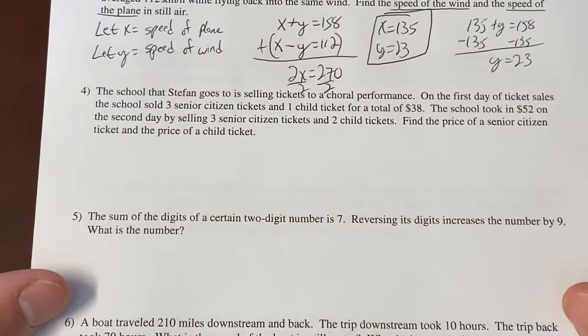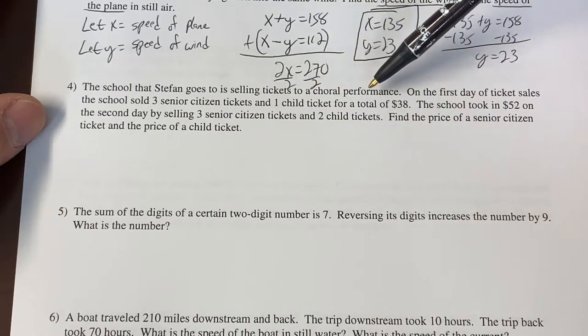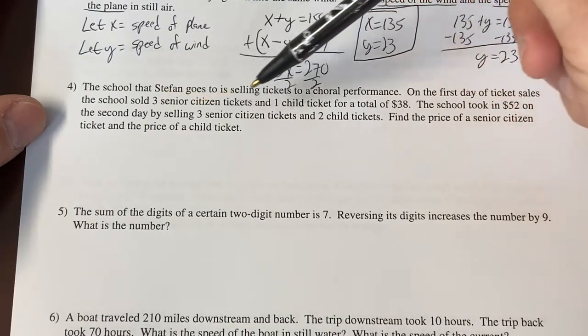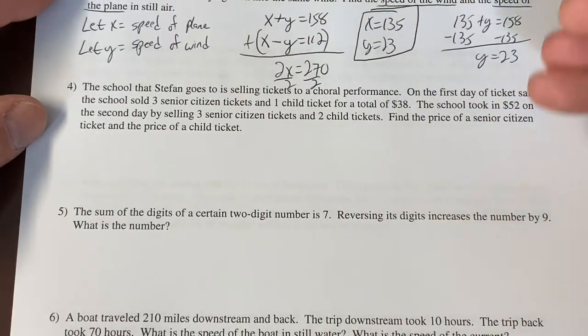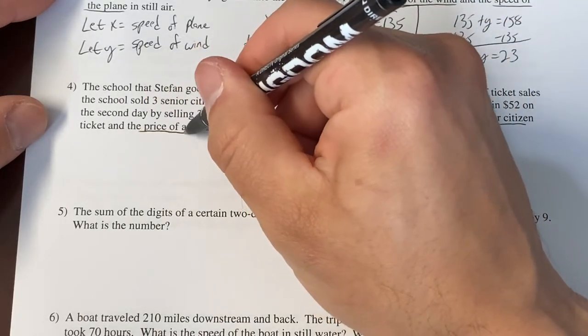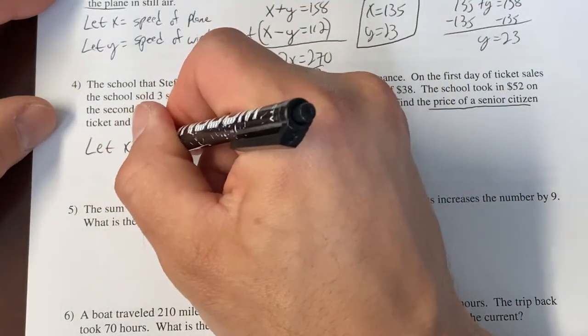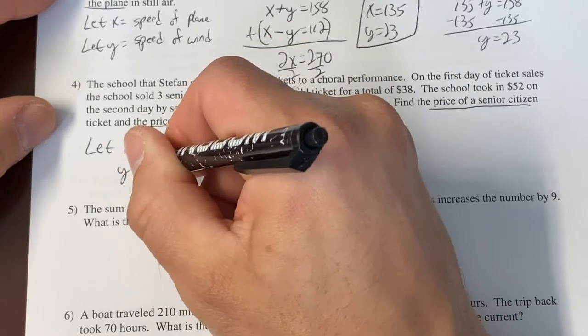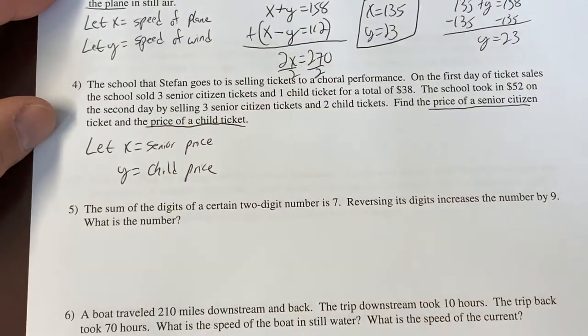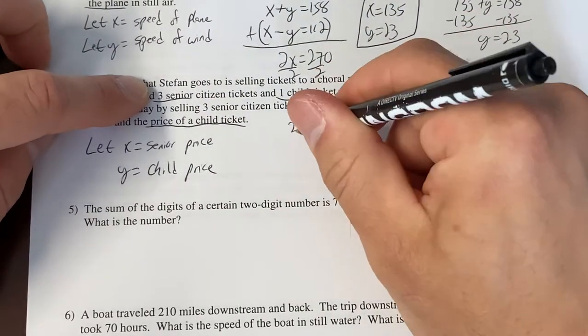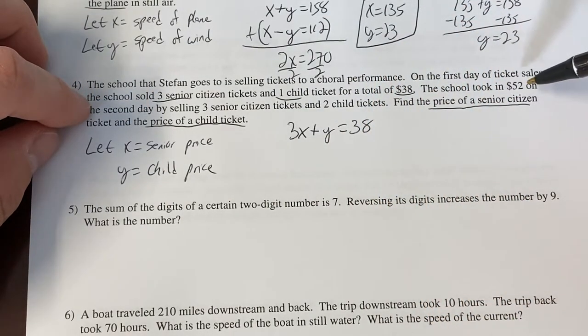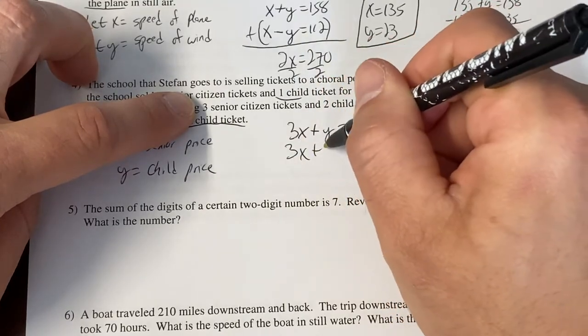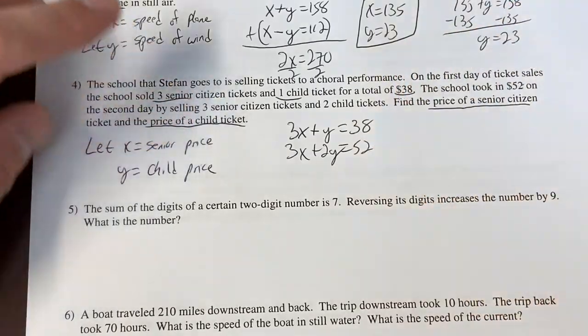I think we're only going to do one more and then I'll give you three for homework. How's that sound? The school that Stefan goes to is selling tickets to a coral performance. On the first day of ticket sales, the school sold three seniors, one child, 38 bucks. The school took in 52 on the second day and that was three seniors, two child. Find price of senior ticket and price of child ticket. There are our variables. Let X equal senior price and let Y equal child price. Always start with the let statements, but we already knew that. We've been saying that all year. Here's what we know. We know that three seniors, one child, 38, three seniors plus one child is 38. What else do we know? We know that three seniors and two child is 52. And there's our system.